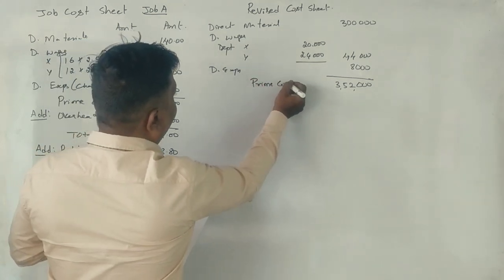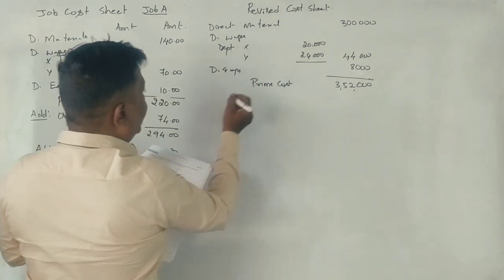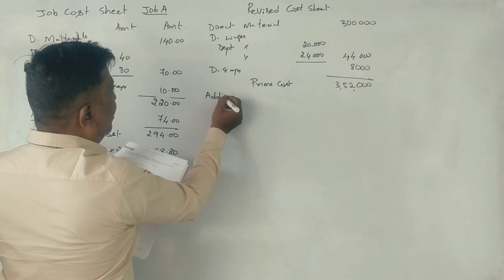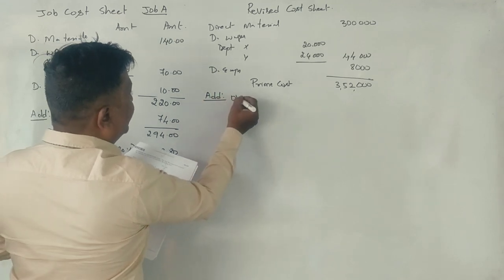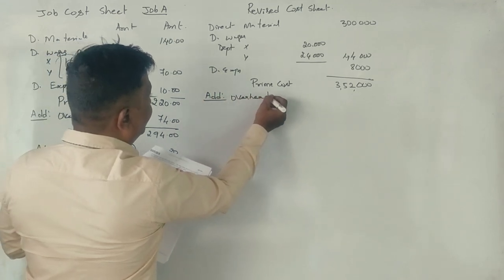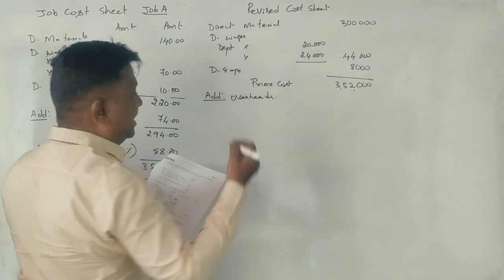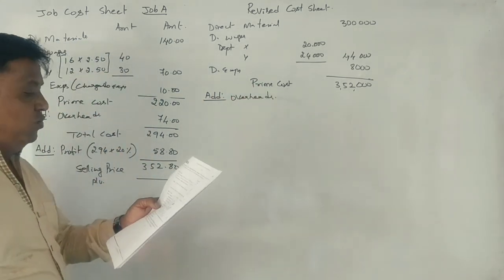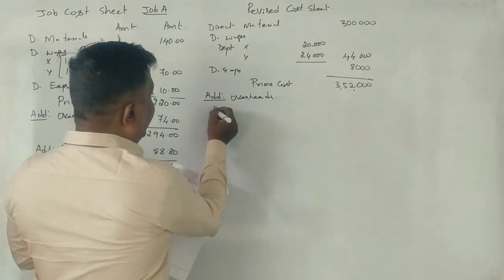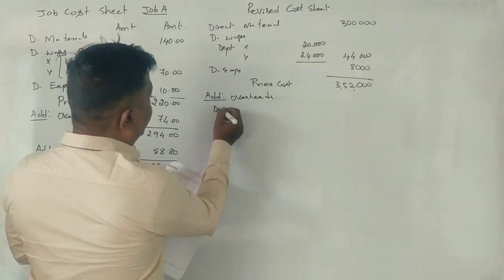Enter the cost of sale. The prime cost is 36,000. The adjusted prime cost figure is 4,000.